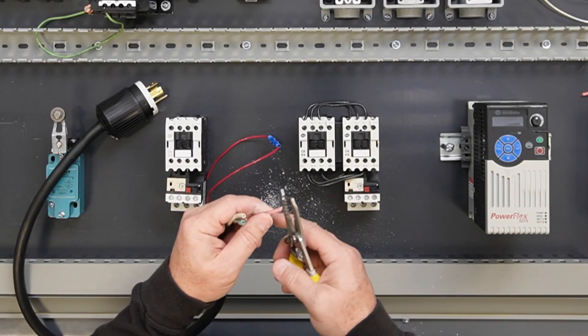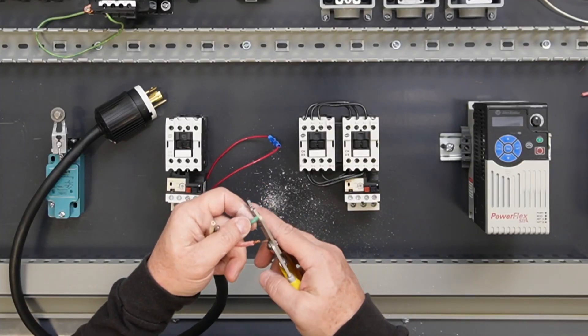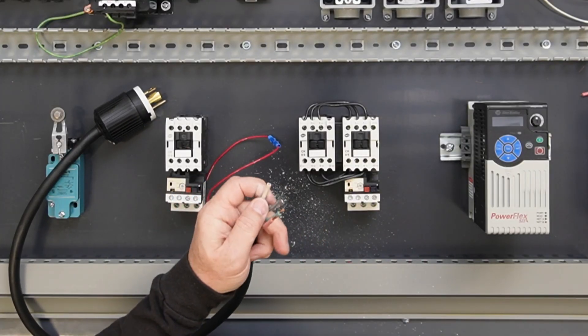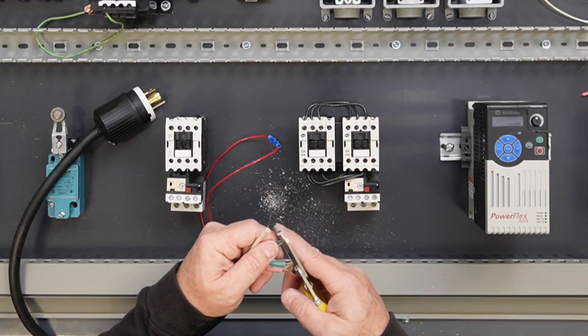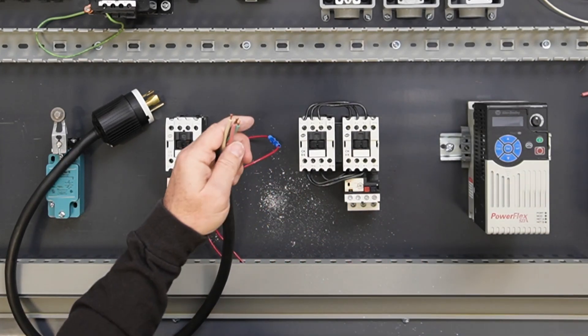Strip each wire. One quarter inch is enough exposed wire to properly test the plug. Use care to not break any individual strands of wire as that will derate the ampacity of the wire.